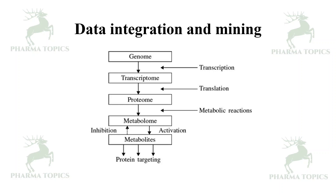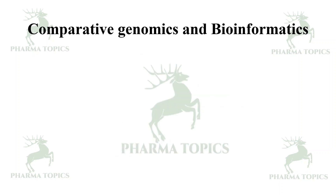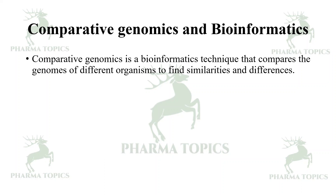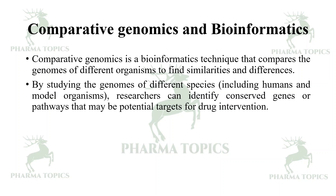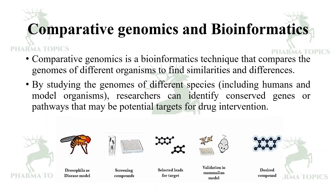Comparative genomics is a bioinformatics technique that compares the genomes of different organisms to find similarities and differences between species. By studying the genomes of different species including humans and model organisms such as mice or rat, researchers can identify conserved genes or pathways that may be potential targets for drug invention.